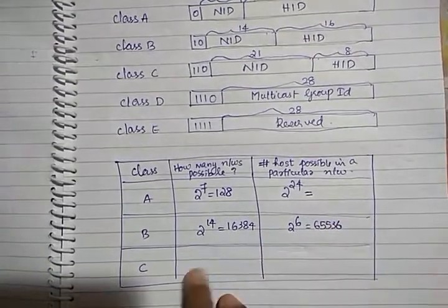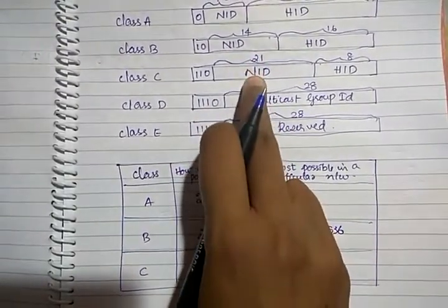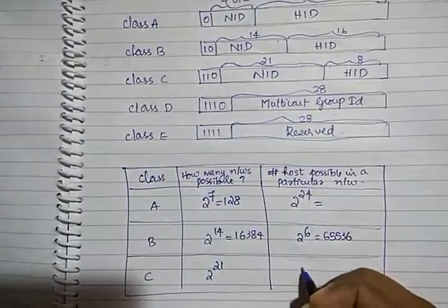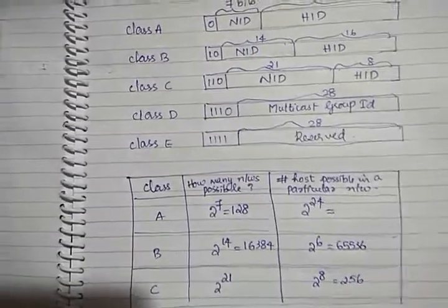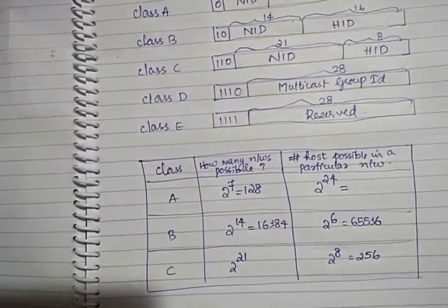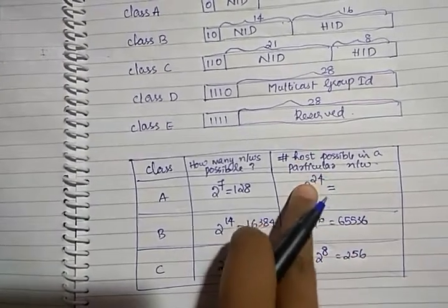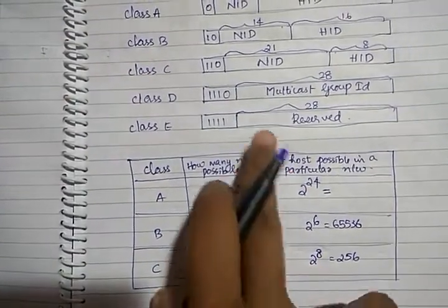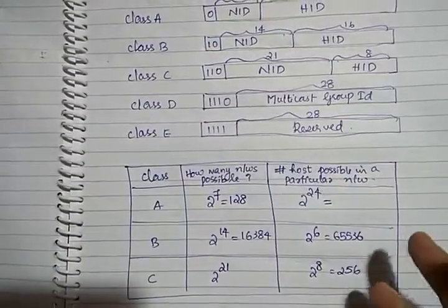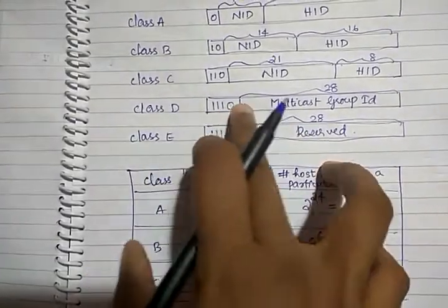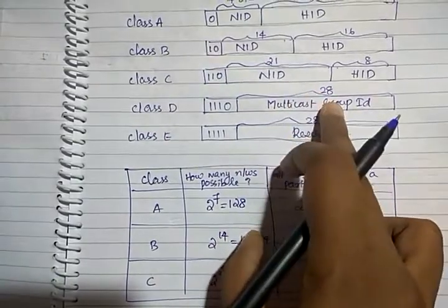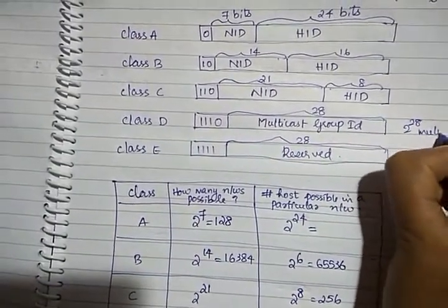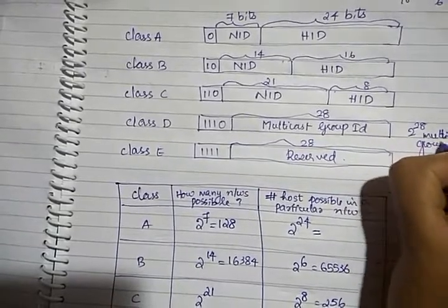For Class C, it is a very small network. The Network ID has 21 bits, so 2 to the power 21 different Class C networks are possible. The Host ID is an 8-bit field, so 2 to the power 8, that is 256 machines, are possible within a particular Class C network. Class C networks are very small compared to Class A — Class A can contain 2 to the power 24 machines while Class C contains only 2 to the power 8. For Class D, using 28 bits, 2 to the power 28 multicast groups are possible.